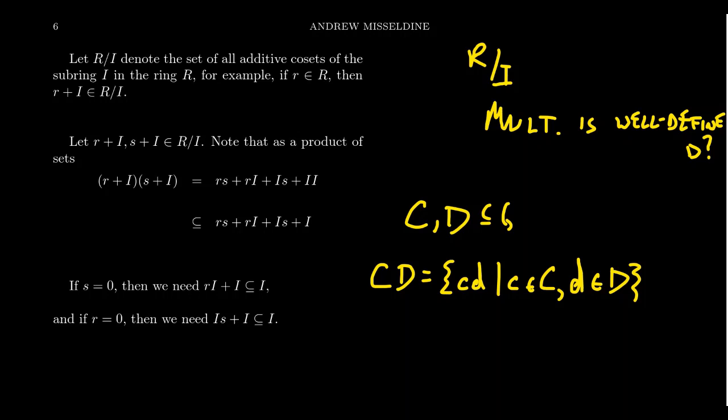This is not just true in groups. If we have any set with a binary operation, we can take subsets of that set and take the set-wise product, or sum if it's addition. That's what one means when you write r + I — you can treat r like a singleton. Since the ring multiplication does not form a group, we don't get all the nice properties we had with Frobenius products for group subsets, so one has to be a little more careful.